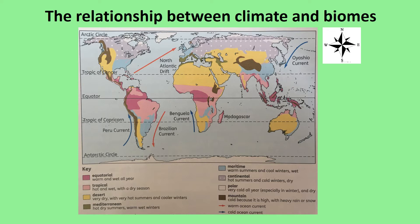The UK has a maritime climate because we're affected by the North Atlantic Drift. As well as latitude, there are lots of other different factors that play a part in creating these particular biomes and what they're like.